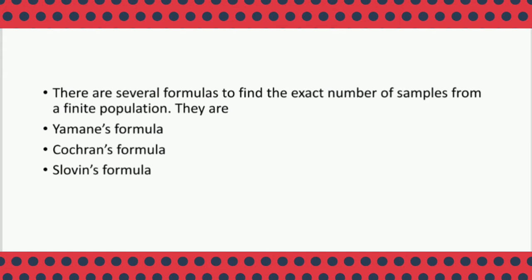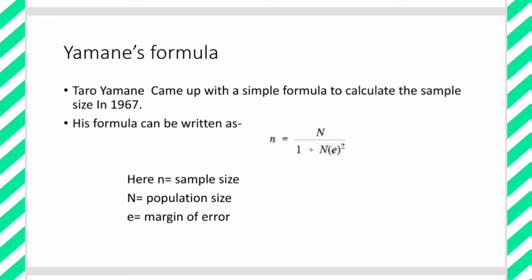Yamane's formula is given by Taro Yamane, who came up with a simple formula to calculate the sample size in 1967. His formula can be written as: n = N / (1 + Ne²). Here, n = sample size, N = population size, and e = margin of error. It must be noted that to apply this formula, one must know the total number of population, so the exact number of population will be determined by capital N, and small n will determine the sample size.